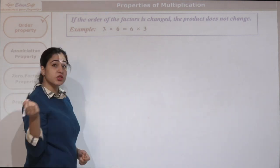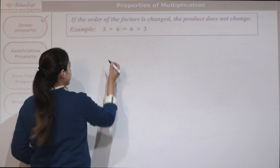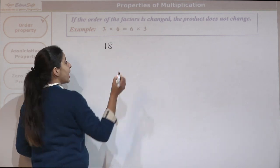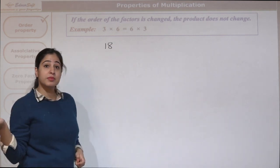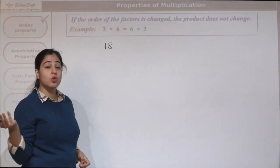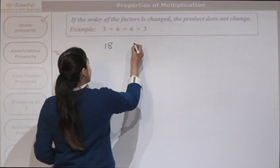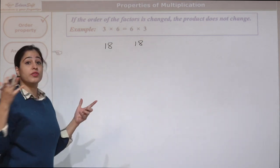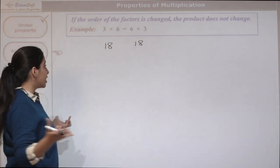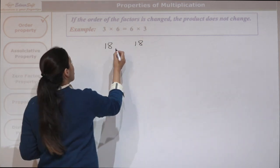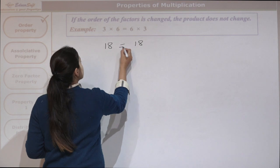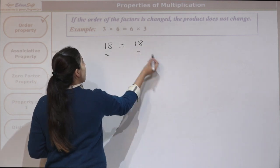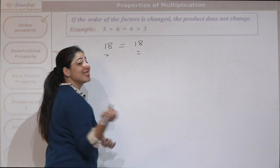3 times 6 is 18. And 6 times 3 is also 18. So if the order of the factors is changed, the product does not change. They both are the same.